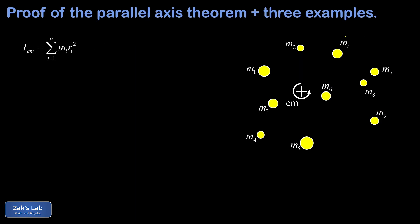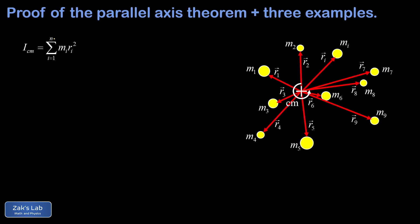A quick reminder of how to compute the moment of inertia of a collection of point masses: with the center of mass as the rotation axis, the moment of inertia is the sum over all masses — as i goes from one to n — of each individual point mass multiplied by its distance from the origin squared. Those r_i squared values are the magnitudes of position vectors pointing from the chosen origin, which is the center of mass, to each object's location.